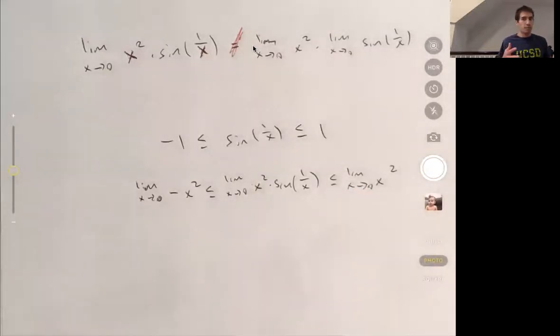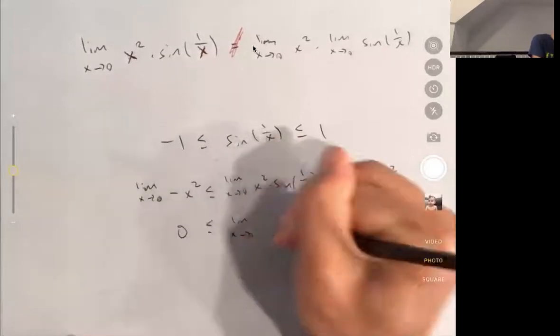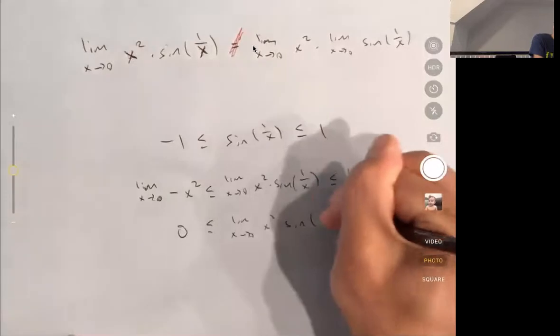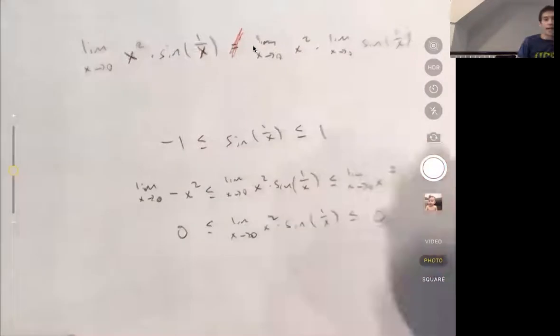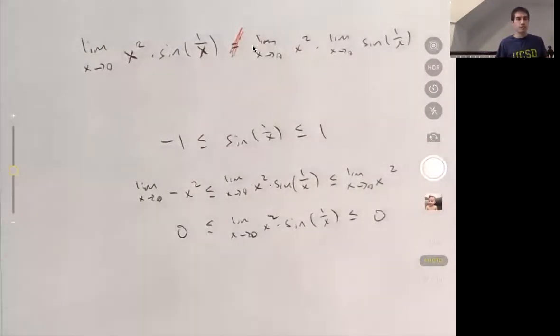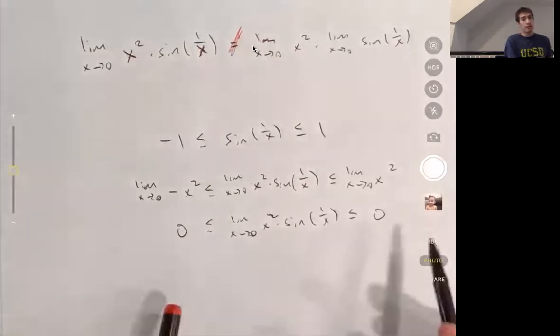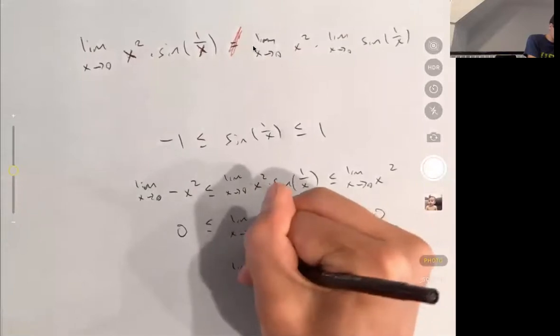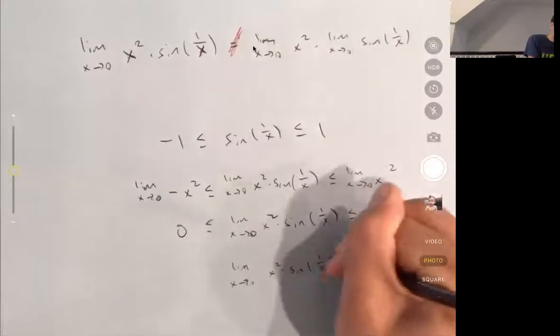And now we can compute both of the limits on either side. So this limit is 0. It's less than or equal to 0. Again, as x goes to 0, x squared also goes to 0. It's a continuous function, so you can just plug in 0. So this is saying that whatever this limit is that we're interested in, it's between 0 and 0. So it has to equal 0. So this says the limit as x goes to 0 of x squared times sine 1 over x, this is actually just equal to 0.